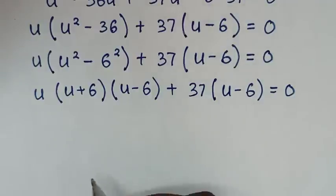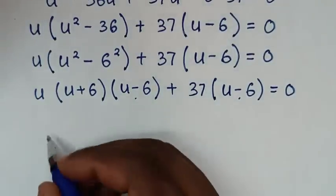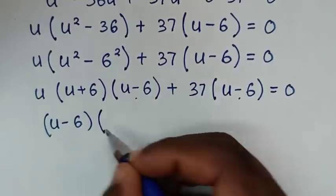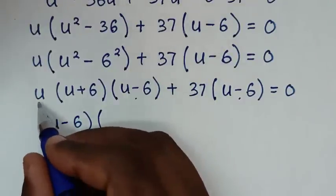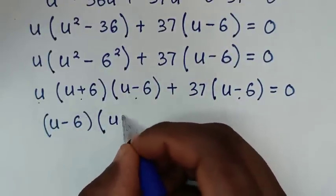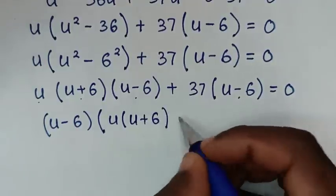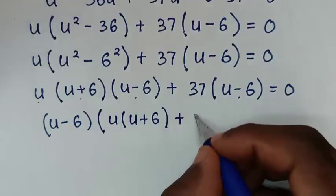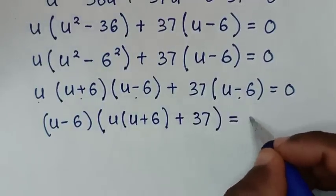In the next step, (u minus 6) is common, so we take (u minus 6) out of the bracket. Dividing gives u(u plus 6), and dividing the second term gives plus 37. So we have (u minus 6)(u(u plus 6) + 37) equals 0.